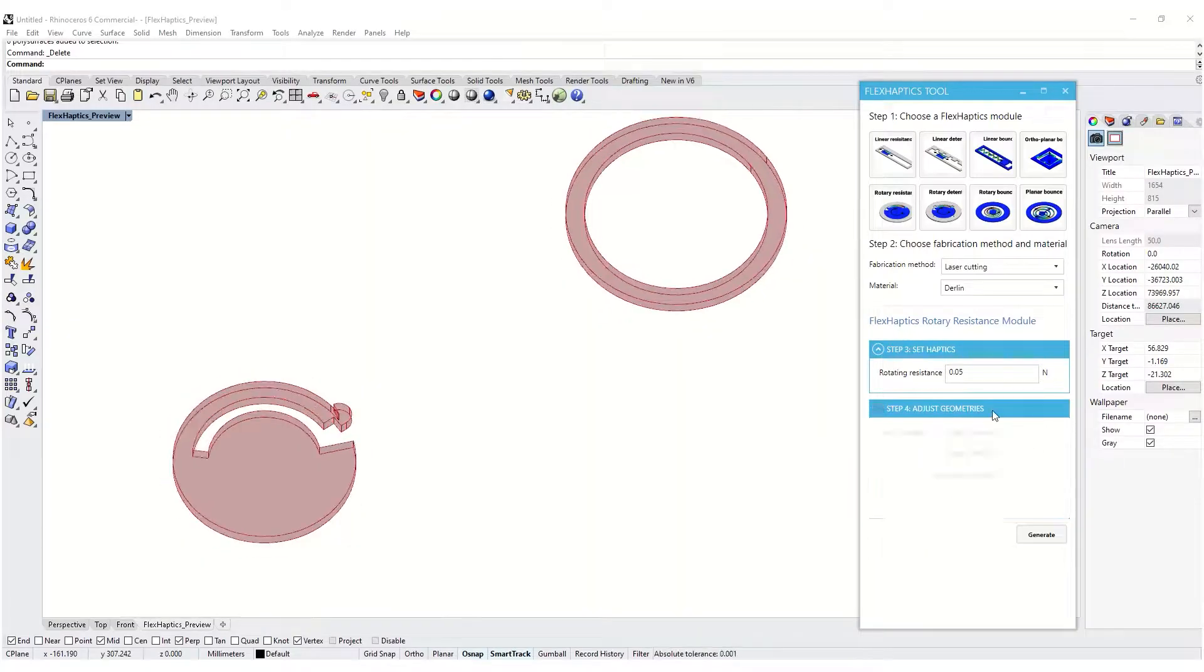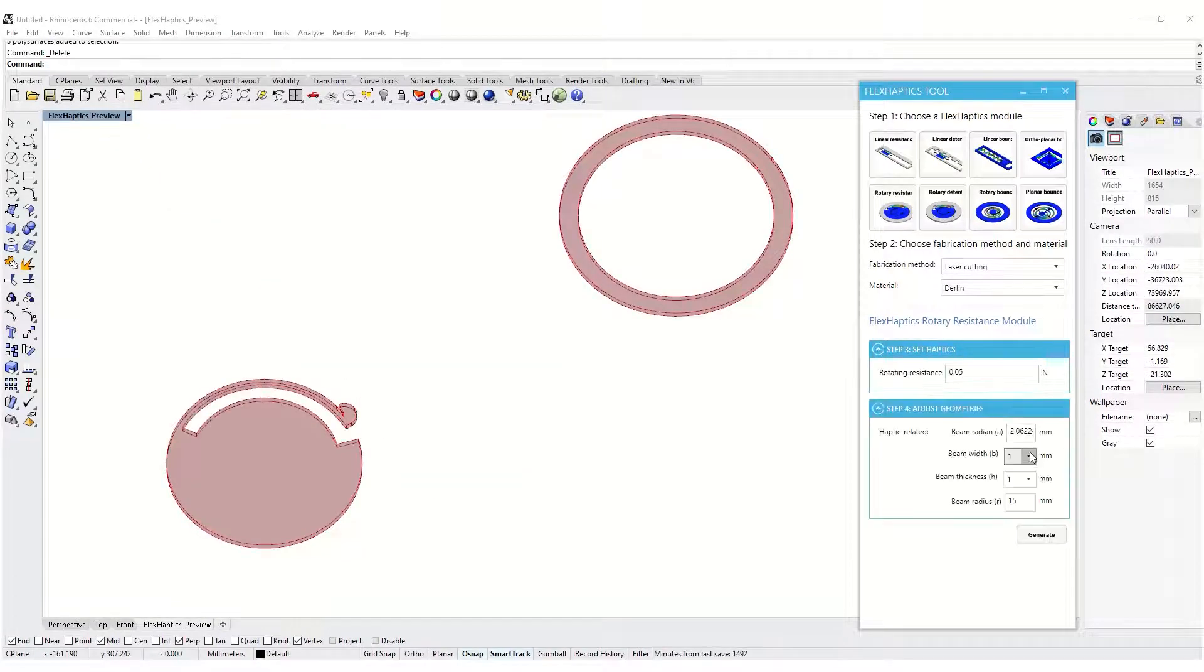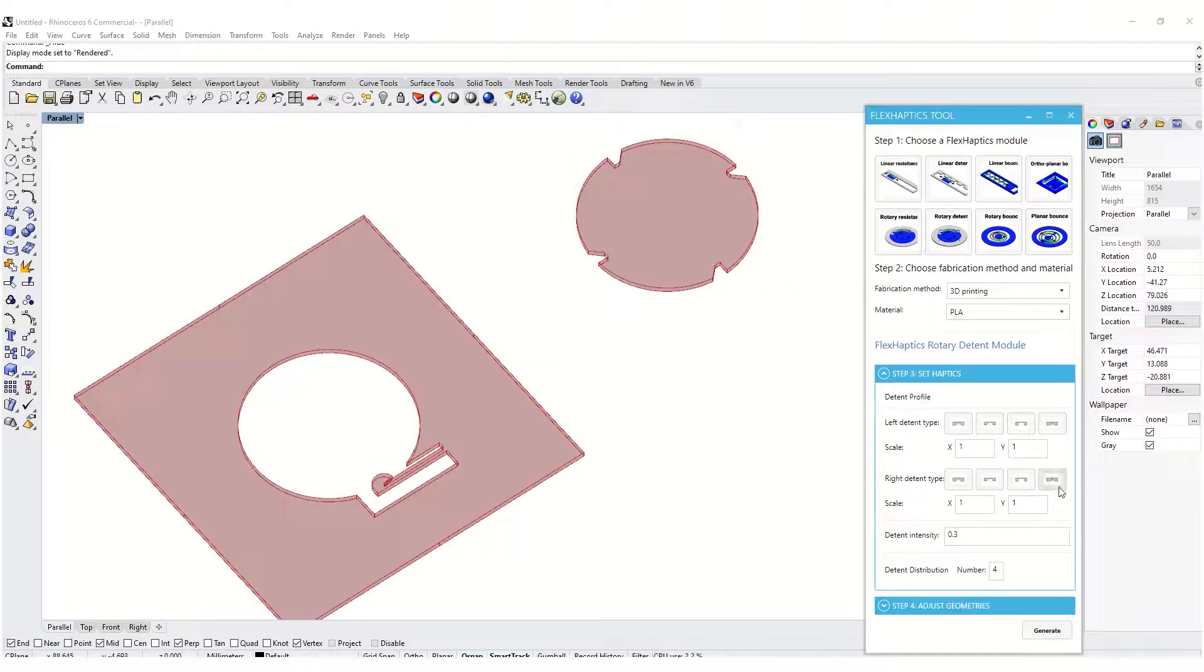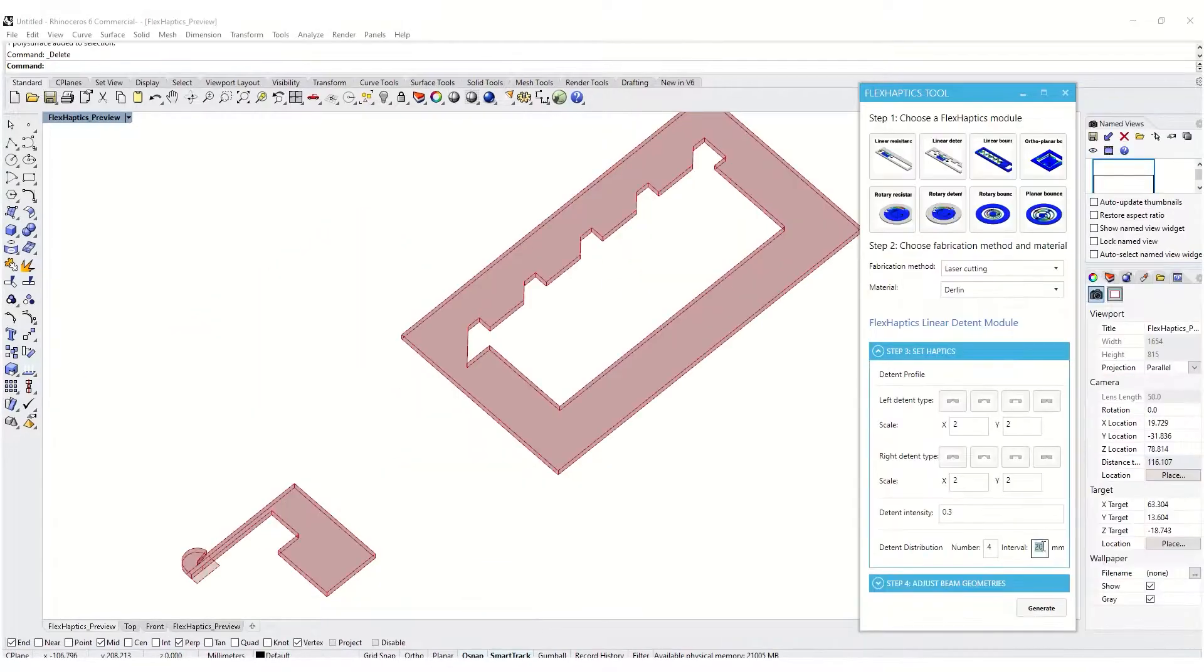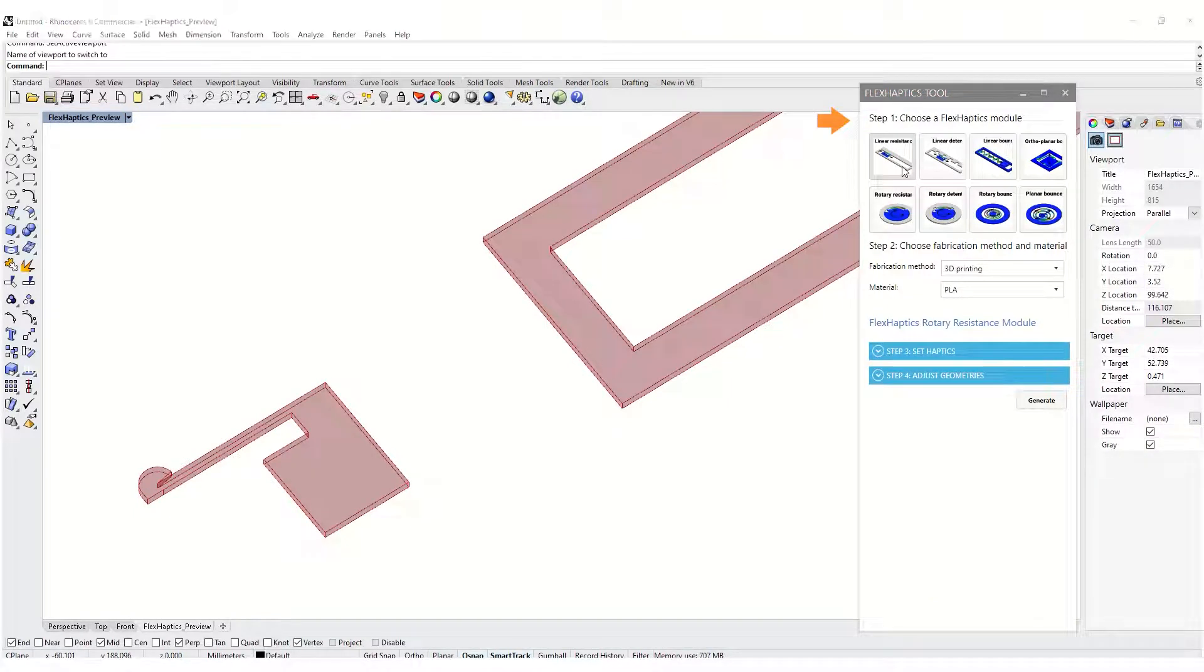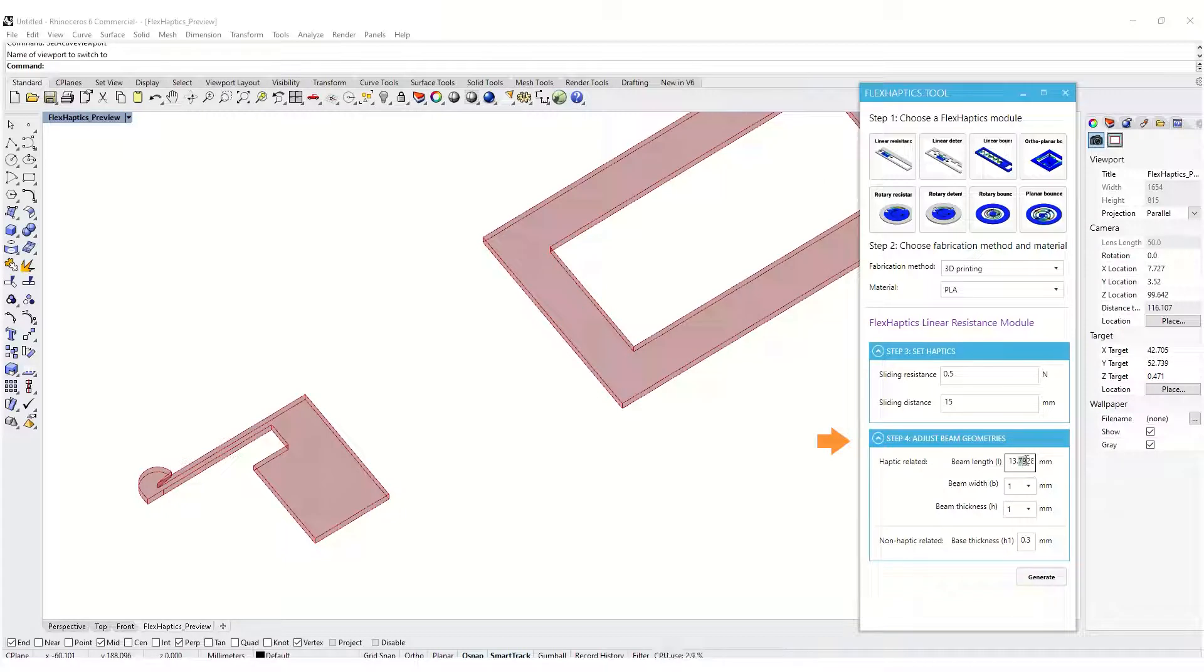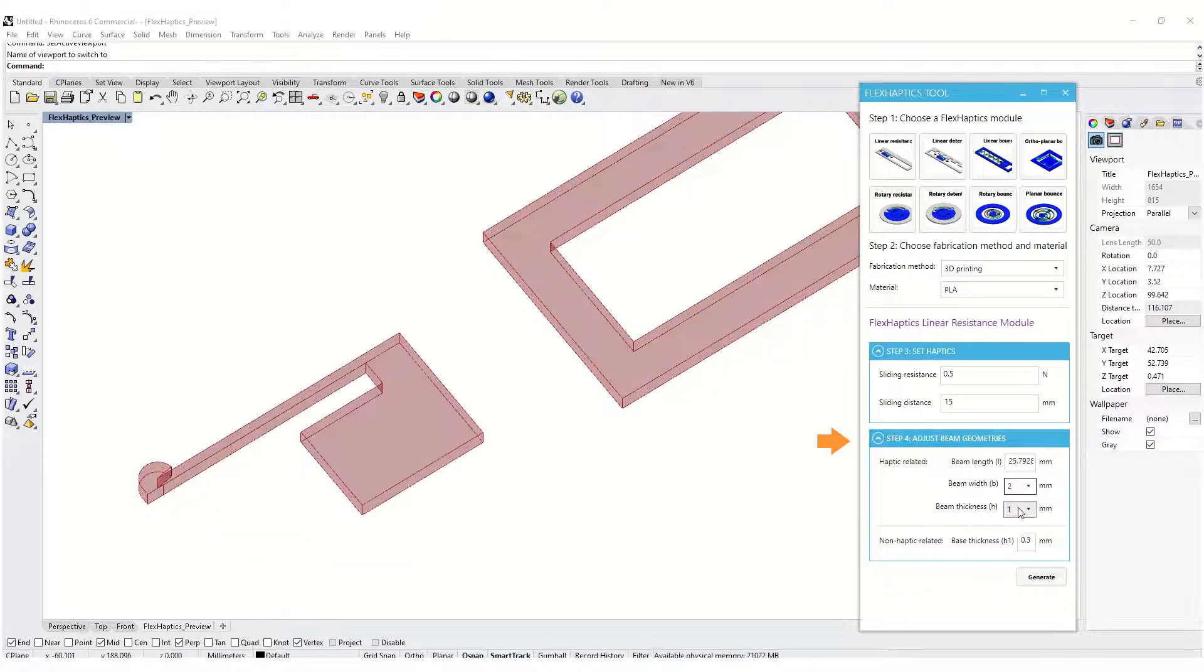We encoded our study into a design editor to support designers. It's developed as a plug-in for Rhino and Grasshopper. To generate a module in Flex Haptics Editor, designers simply choose a module tab, select a fabrication method and material, and set desired haptic values. Then the editor generates a geometry in Rhino viewport and calculates its haptic profiles. Designers also have chances to explore other possible geometries that produce the same haptic profiles.